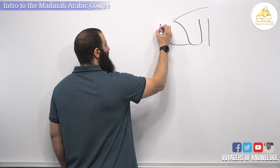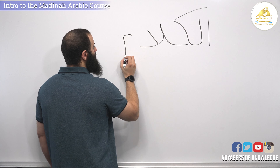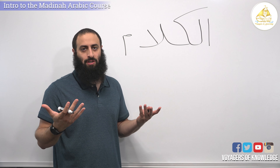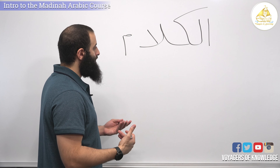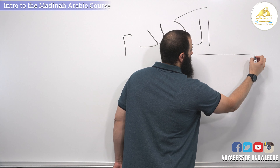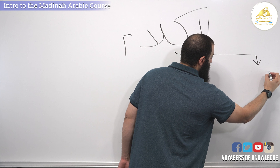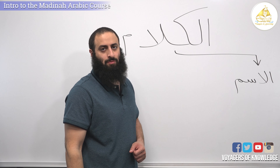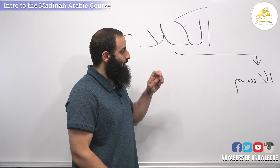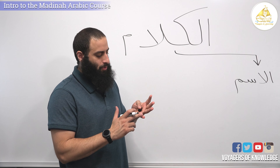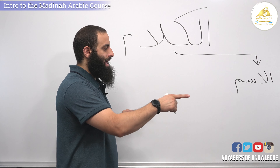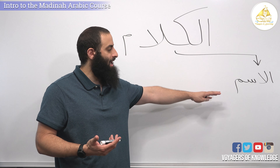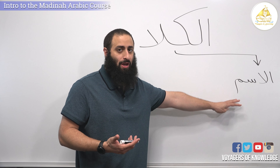Al-Kalam means speech. Speech has to be coherent — it can't just be a mixture of words with no meaning. So what do we have to have in a sentence? Very commonly you'll have Al-Ism — the noun. Nouns have a lot of different things that go into them: a person, a place, a thing. But what about هذا? That's not a person, place, or thing — that's a special pronoun, and that also comes under here. Anything that's a noun, a name, or a pronoun goes here.